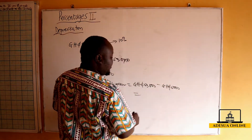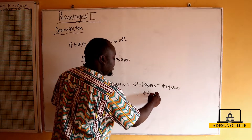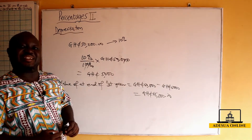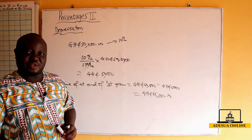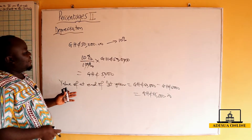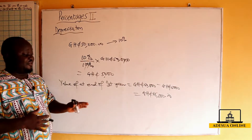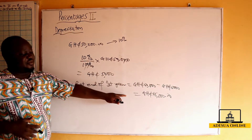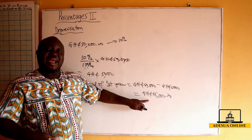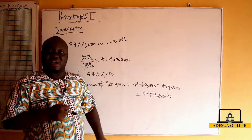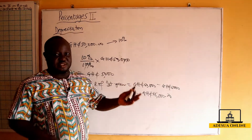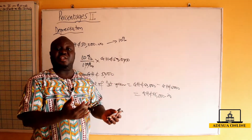So that gives us 45,000. So 45,000 will be the value of my car if I decide to sell it in one year's time. Moving on, to find the value of my car at the end of the second year, I'm going to take this 45,000 and calculate 10 percent again. You keep calculating depreciation until you get to the number of years you've been asked to stop.